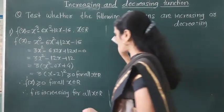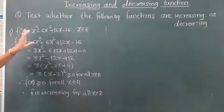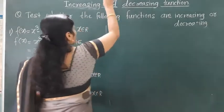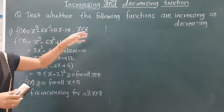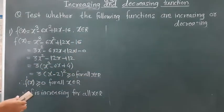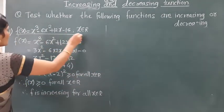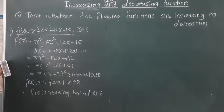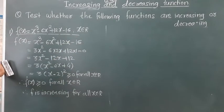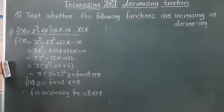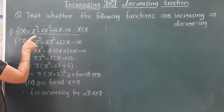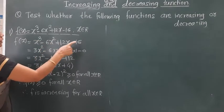Let's look at an example. Exercise 2.4: Test whether the following function is increasing or decreasing. The function is f(x) = x³ - 6x² + 2x - 16, where x belongs to R, meaning real numbers.